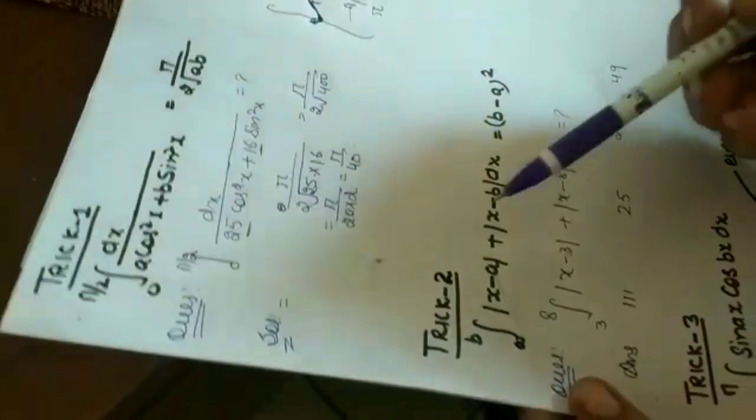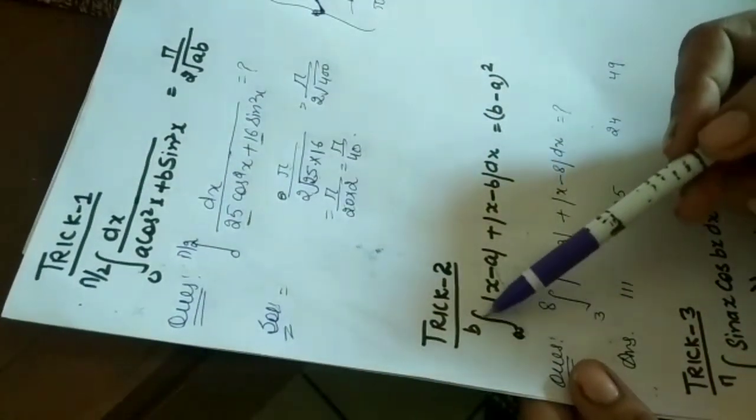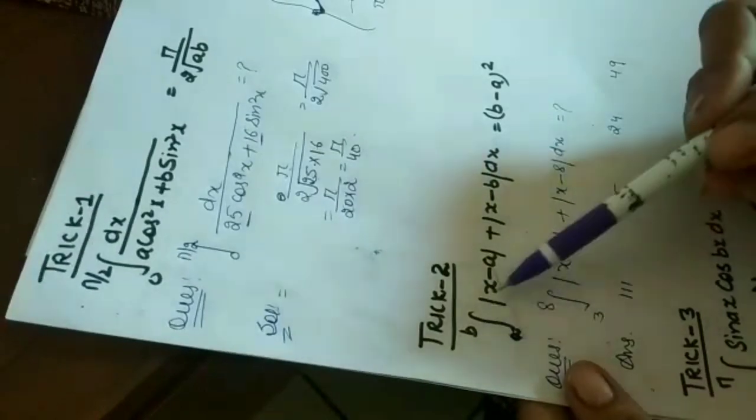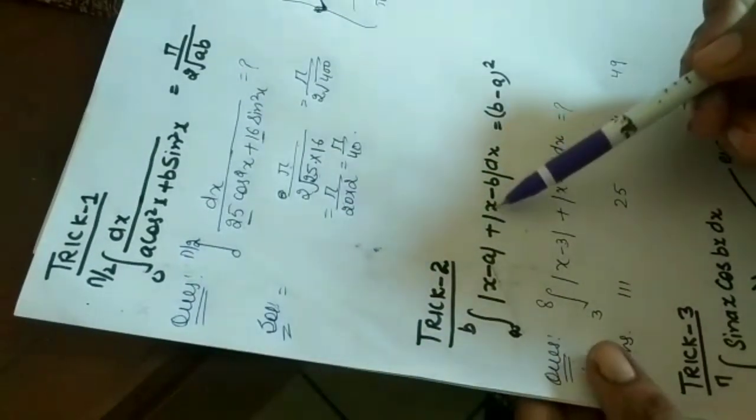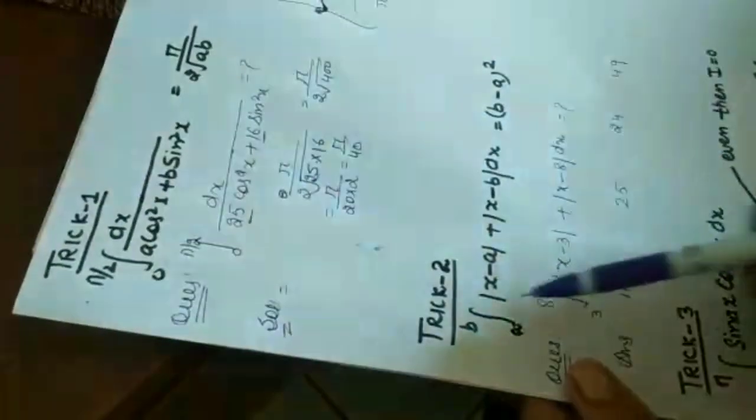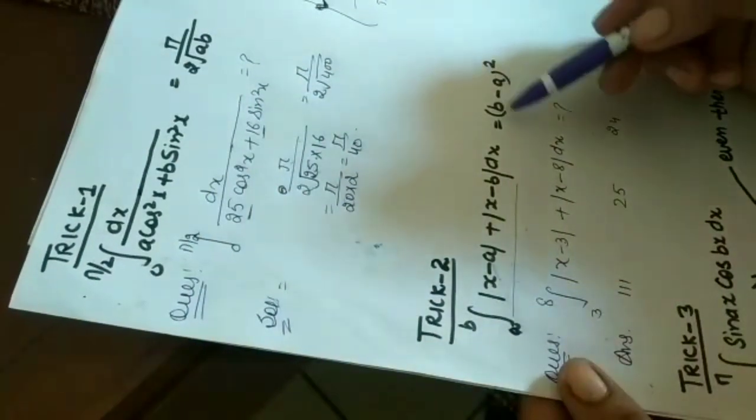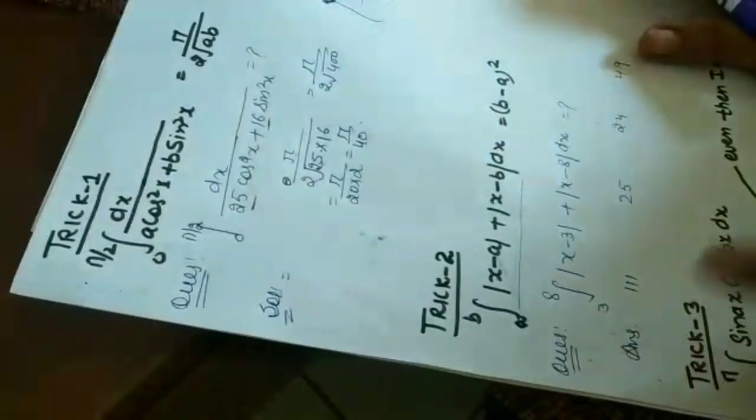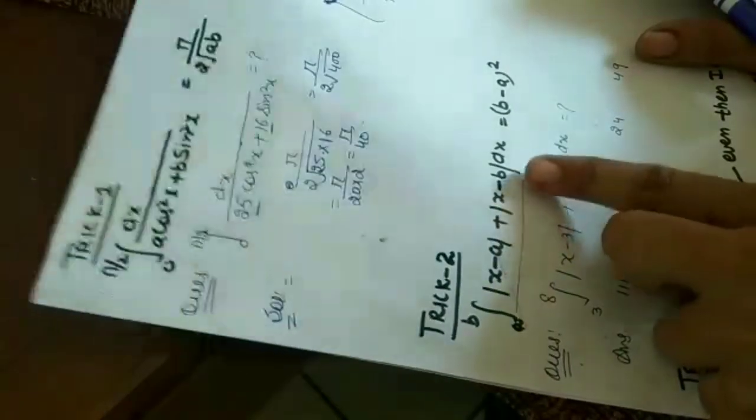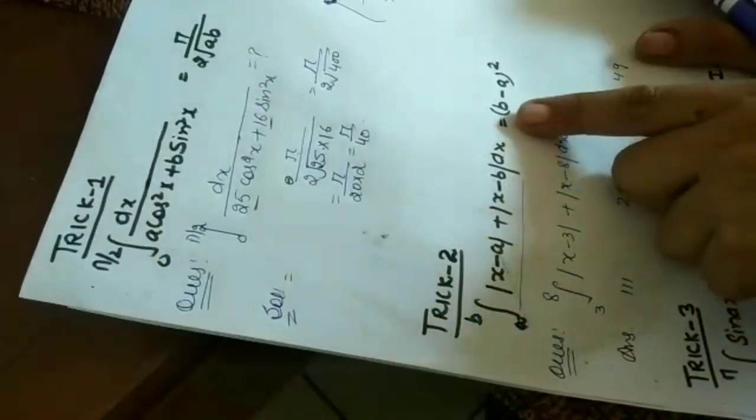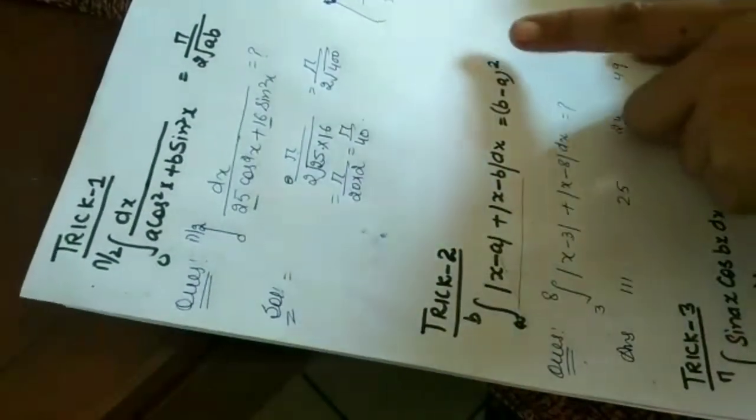Now trick number 2. Integration of the function from a to b, limits are from a to b, mod of x minus a plus mod of x minus b dx. The direct answer is b minus a whole square, which is upper limit minus lower limit whole square.